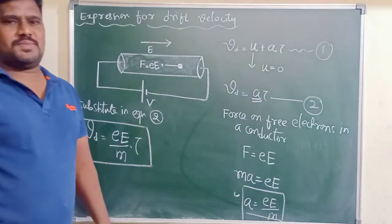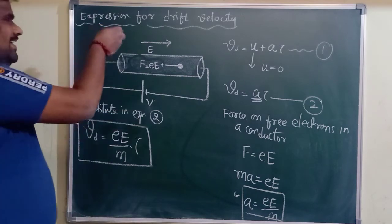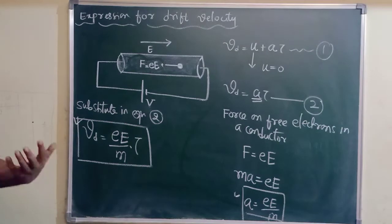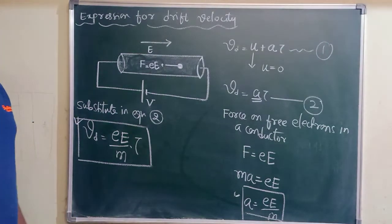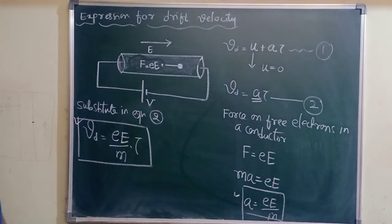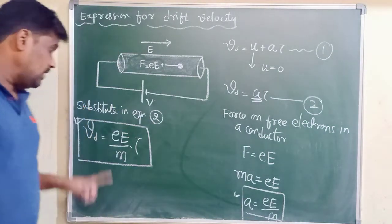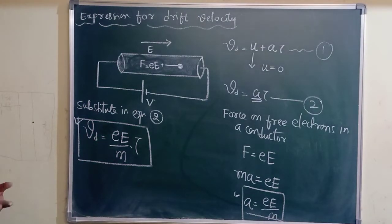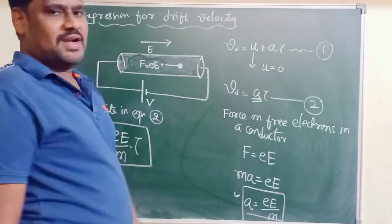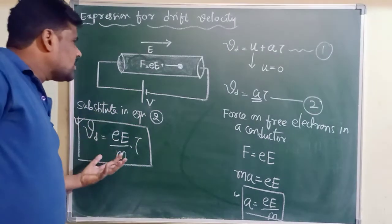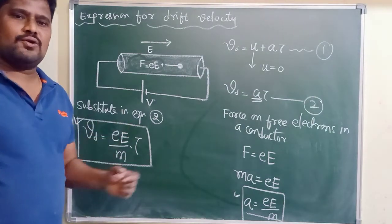This concept is what we call the dynamics of the electron. Dynamics means the study of motion of a particle, so here studying the motion of electrons makes it electrodynamics. We calculated force on the electron, acceleration of the electron, and velocity of the electron — force, velocity, acceleration — all terms related to dynamics of a particle. Here we study the dynamics of the electron, so this concept is related to electron dynamics.